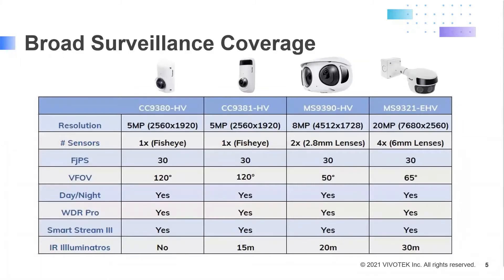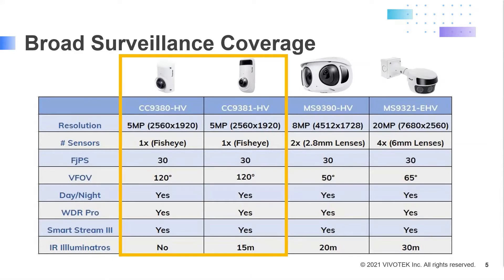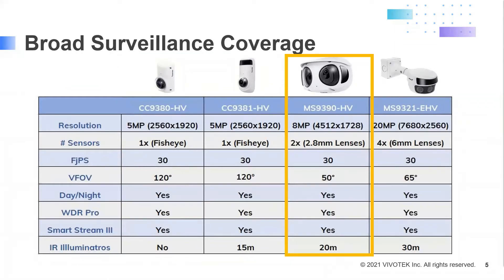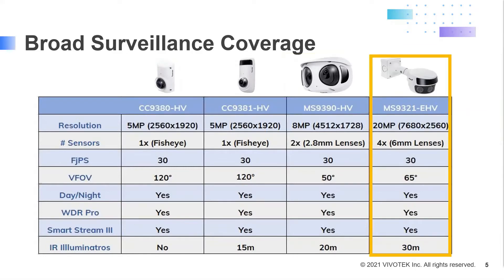Just like you'd choose a dome versus a bullet or box camera, the 180 degree camera lineup lets you pick the ideal camera for your scenario. VivoTech provides three form factors, each designed for different coverage distances. The CC line is compact, has a fisheye lens, and provides recognition up to 50 feet or 15 meters. The dual sensor MS9390 stitches two 4 megapixel images together for an 8 megapixel panoramic image, excellent for recognition up to 20 meters or about 65 feet. The MS9321 has four lenses that stitch together to give one 20 megapixel panoramic image, providing recognition capabilities up to 100 feet or 30 meters.